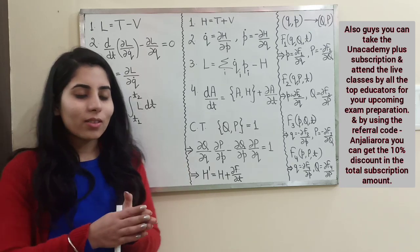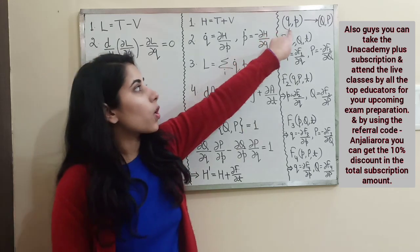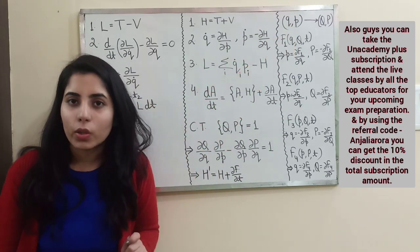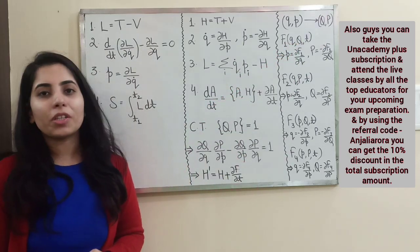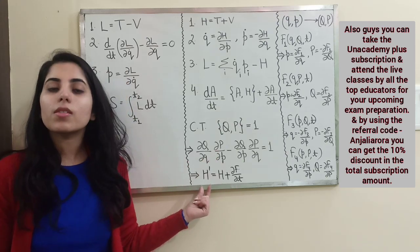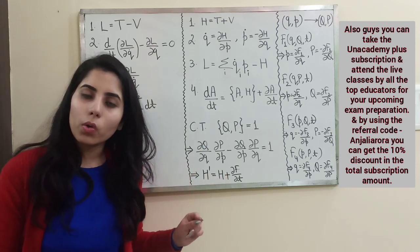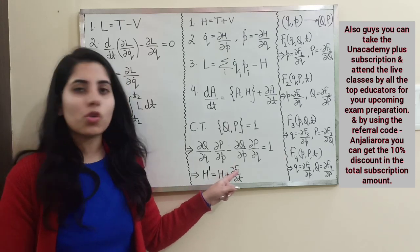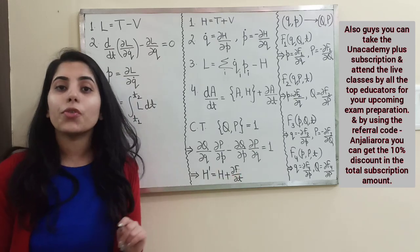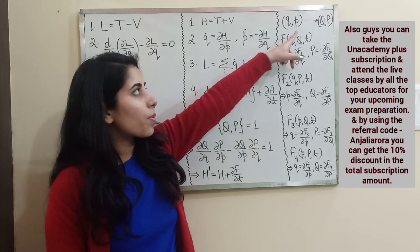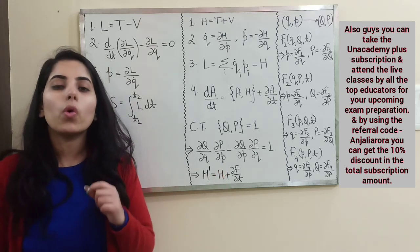If a canonical transformation has been done and you have both old and new coordinate sets, then corresponding to the old set you have Hamiltonian H, and corresponding to the new set you have Hamiltonian H-dash. The relation between H-dash and H involves F, the generating function which facilitates the transformation.